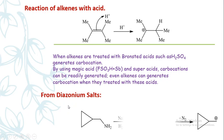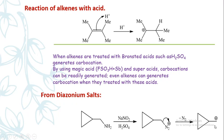Another method is from diazonium salts: amines can be converted into diazonium salts by treating them with NaNO₂ in the presence of H₂SO₄. The diazonium salt easily forms a carbocation due to the high stability of N₂ as a leaving group. When the amine reacts with NaNO₂ in the presence of H₂SO₄, a diazonium salt is formed, and after removal of the N₂ molecule, a carbocation is generated.